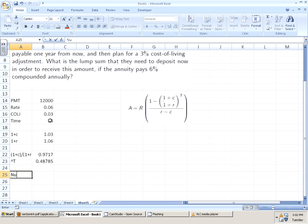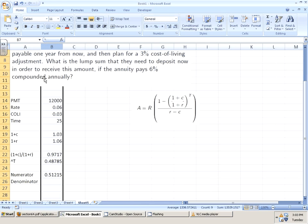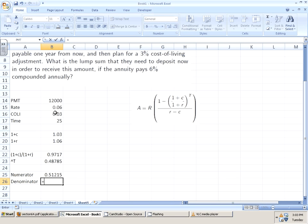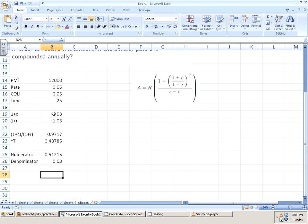So now, I need to figure out the numerator and the denominator. So let's look at the numerator. This looks like one minus this quantity. The denominator, and let's make this just a little bigger, is the rate minus the cost of living increase. So I've done one plus c, which is this quantity right here in the numerator. I've done one plus r, which in the numerator is this quantity in the denominator.